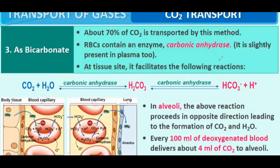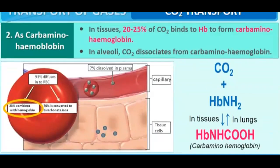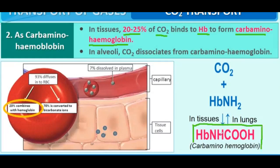In the tissues, 20-25% of carbon dioxide binds to haemoglobin and forms carbaminohaemoglobin. In the alveoli, the reverse happens — carbaminohaemoglobin releases CO2, enabling carbon dioxide exchange and oxygen exchange in the lungs.